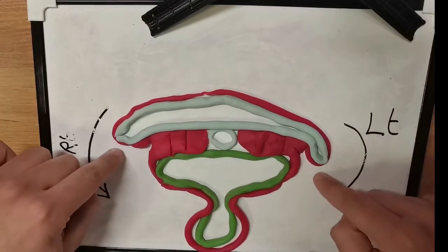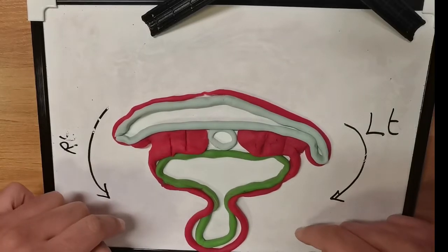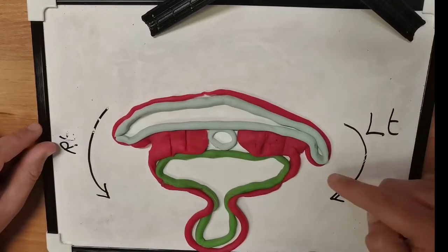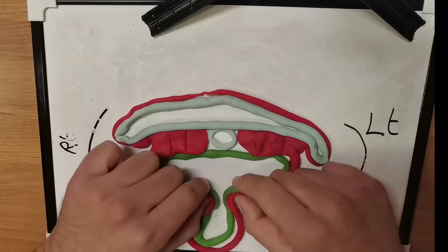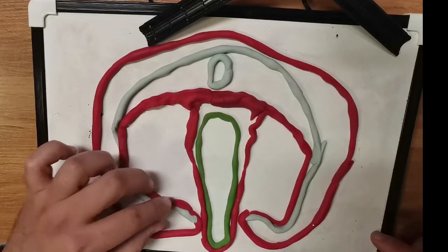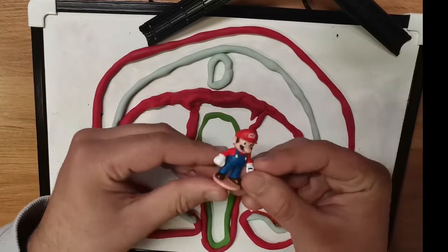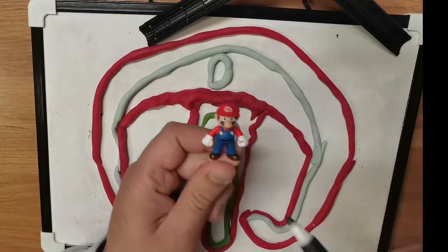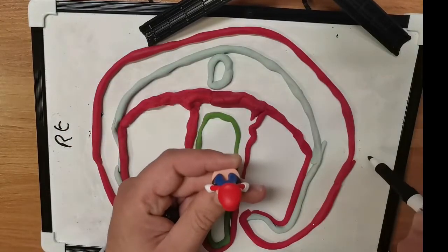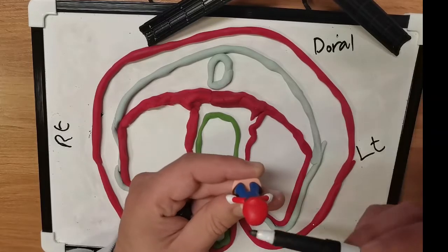The lateral parts of the embryo — the right and left parts — are approaching each other and will make contact. Let's reorient: we have introduced a transverse cut and are looking from above, so this side is the right, this is the left, this is the dorsal side, and this is the ventral side. You can also see how the neural tube has been pushed towards the dorsal side.